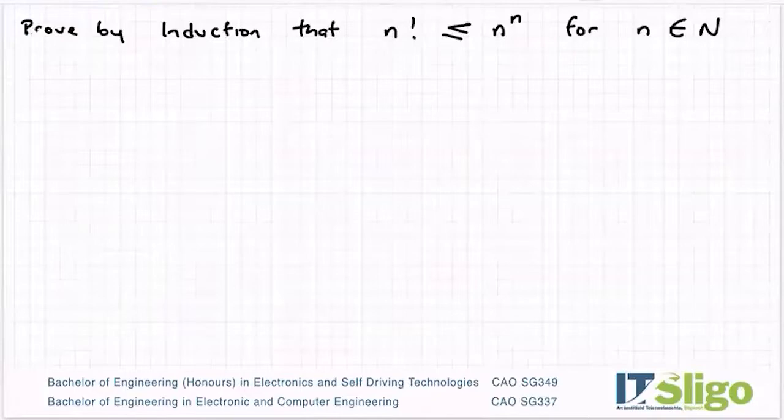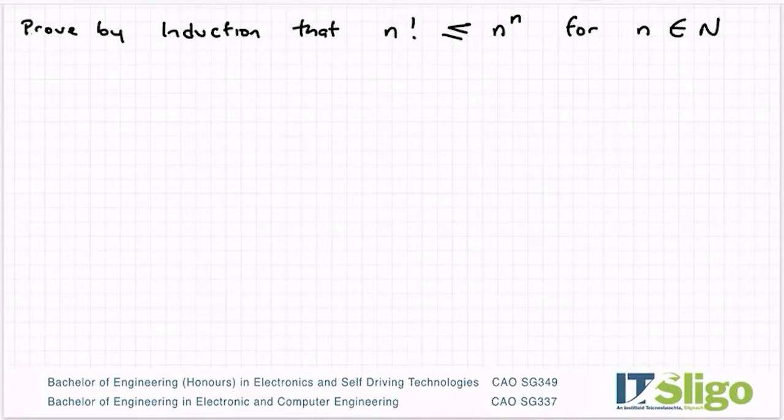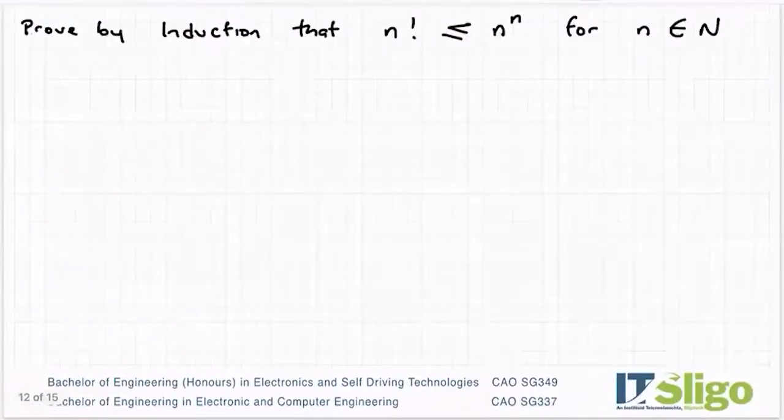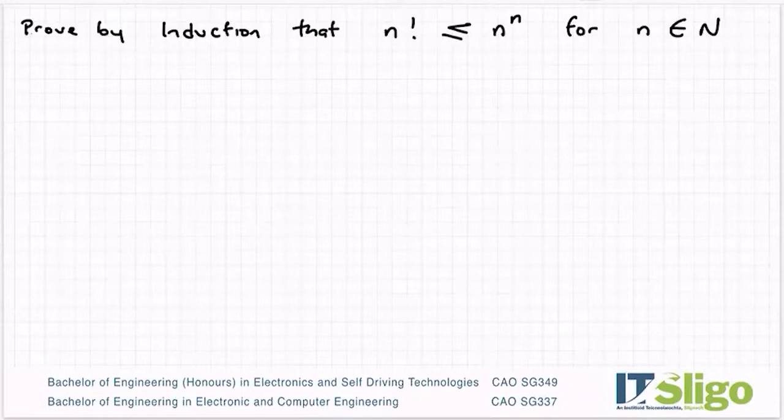The third type of statements that you can be asked to prove by induction is the inequality ones. So this is one example from the book. I have another example from the book. I don't think I could find any in the exam papers, so I'm going to do these ones instead. Prove by induction that n factorial is less than or equal to n to the power of n for all n is an element of N. So for all natural numbers, prove that n factorial is less than or equal to n to the power of n.